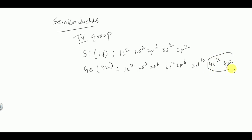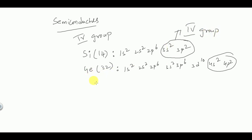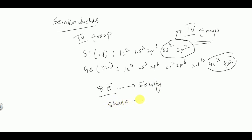These four outermost electrons are called valence electrons. Since the number of valence electrons is four, these are considered fourth group elements. All semiconductors have four valence electrons in their outermost shell. Since they have four electrons and require eight electrons for stability, they will share electrons.